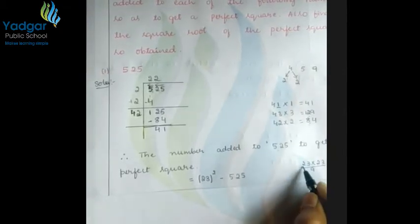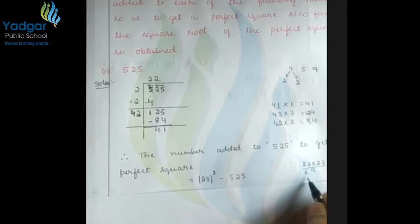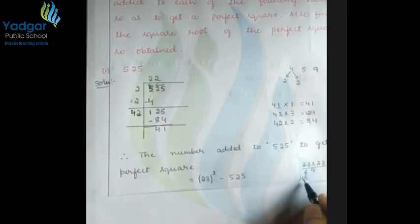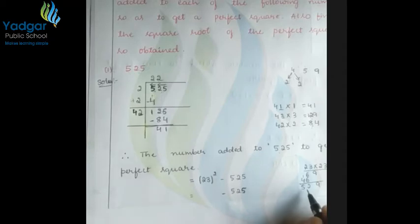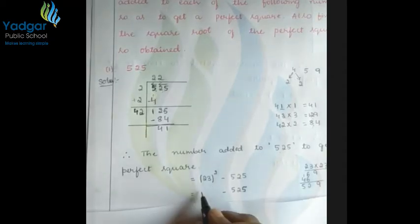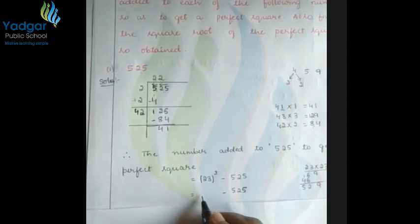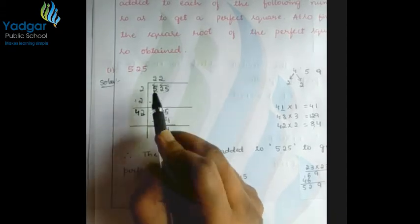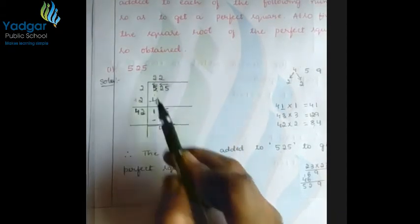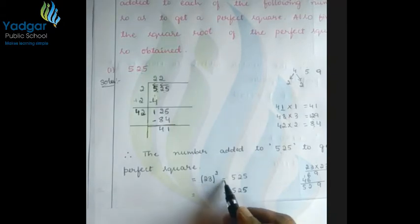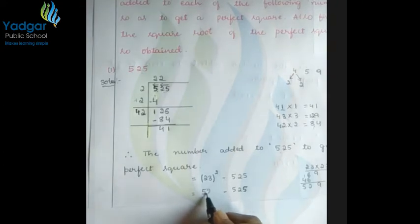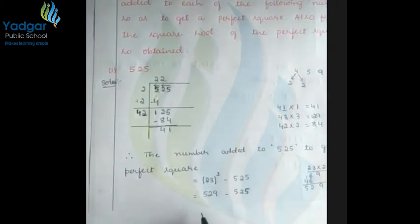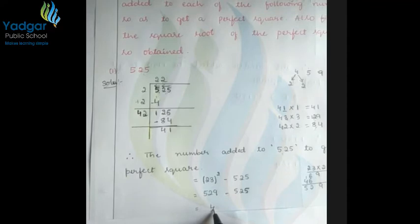Calculating 23×23: 3×3=9, 3×2=6, 2×3=6, 2×2=4. So we get 9, then 6+6=12, then 4+1=5. We got 529. So 23²=529. Therefore, 529 minus 525 equals 4. The answer is 4.